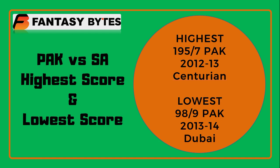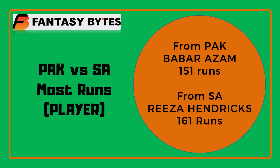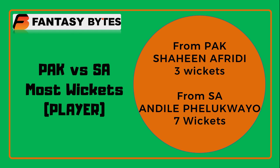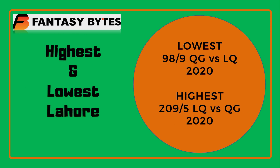Between these two teams, the highest score is 195-7 by Pakistan in Centurion, and the lowest score is 98-9 by Pakistan in Dubai. The most runs are from Babar Azam with 151 runs for Pakistan vs South Africa — though he got a golden duck in the last game, expect him to score big this time. On the other hand, Reza Hendricks has 161 runs and scored a fifty in the last game. The most wickets in this matchup go to Shaheen Shah Afridi with only 3, while Anrich Nortje has 7 wickets vs Pakistan and took 2 wickets in the last game as well.